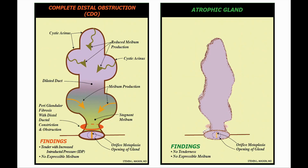I will finish this video abstract with two key concepts which I now present graphically. The slide on the left shows perioductal fibrosis causing complete distal obstruction of the central duct just above the orifice. This leads to elevated intraductal pressure and lid tenderness behind the obstruction which includes the entire gland. No meibum is expressible from this gland. If the obstruction is not released, the elevated pressure will go on to cause whole gland atrophy as shown on the slide on the right.